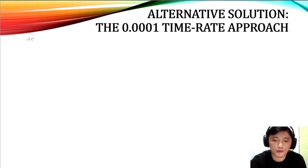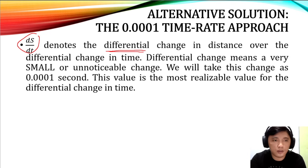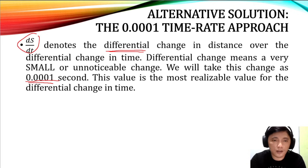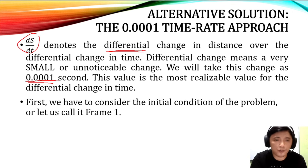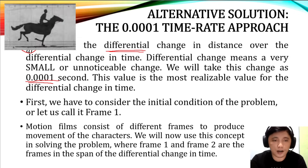Here are the concepts behind this technique. ds/dt denotes the differential change in distance over the differential change in time — a very small change. The key is that we take this differential change in time as 0.0001 seconds, which is the most realizable value for the differential change in time. We consider the initial condition as frame 1, then let the object move for 0.0001 seconds to get frame 2.